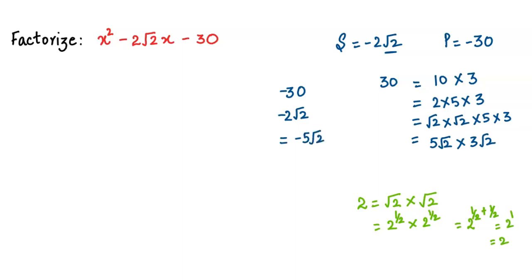So we keep -5√2. This factor is negative and the other factor is positive, so that the sum is -2√2. Now let's look at the product again: -5√2 into 3√2 gives us -30.